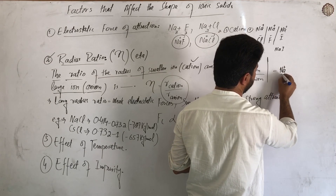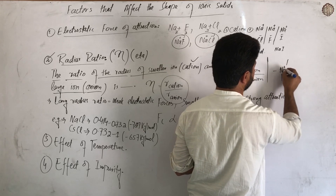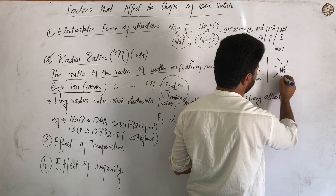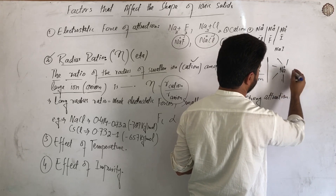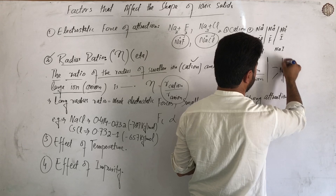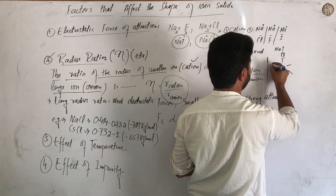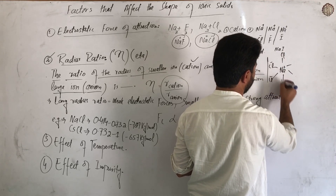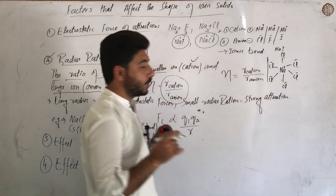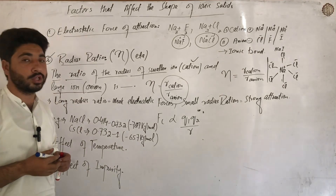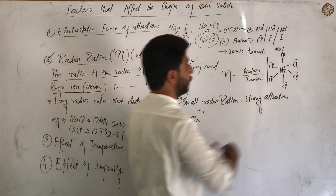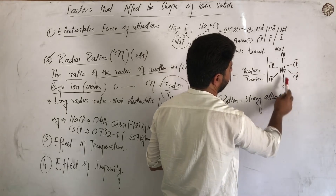For example, sodium - the coordination number is 6. In sodium chloride, the coordination number of chlorine around sodium is 6. So the coordination number in NaCl is 6. This coordination number is related to the radius ratio of the ions.